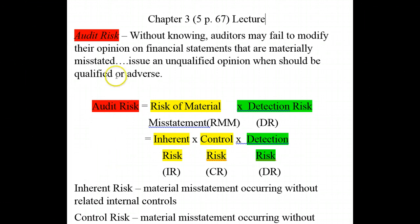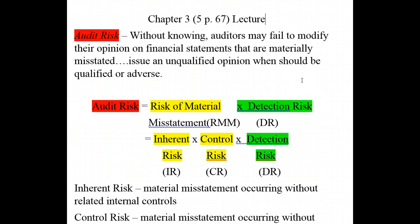The first thing is some discussion about audit risk. Audit risk is the risk that, without knowing, auditors may fail to modify their opinion on financial statements that are materially misstated. In other words, they may issue an unqualified opinion when there should be a qualified opinion, an adverse opinion, or possibly a disclaimer of opinion.